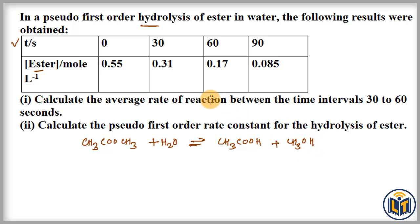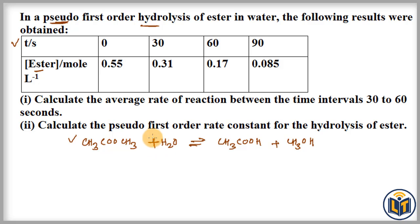Now, a pseudo reaction is a reaction which appears to be of a different order than it actually is. For example, this is a pseudo first order reaction, but if we look at this reaction there are two reactants taking part, which means this reaction should be of second order. But in actuality it is first order — in such reactions, one of the reactants is present in such excess that it is not easily traceable, and that is how the reaction appears to be of first order.